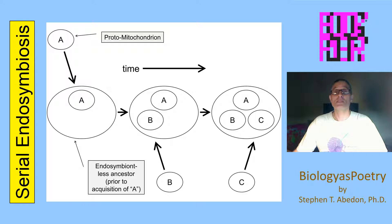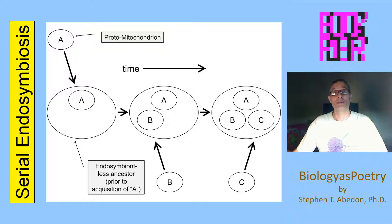Their genes, though, haven't necessarily completely gone away, but instead tend to migrate into the nuclear genome, where they are then expressed. Those expressed genes — the resulting proteins — then migrate back to the endosymbionts.